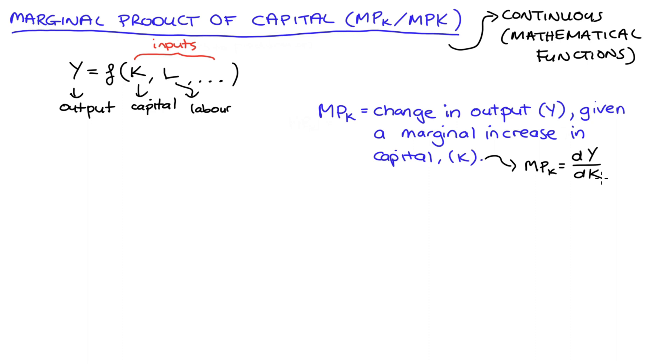Now derivatives are just really very small changes, so the fraction here, dY/dK, can be read as: we're looking for the change in output given a marginal or very small change in capital. Importantly, this analysis is all done ceteris paribus, so labor, land, and all of our other inputs to production are being held constant.